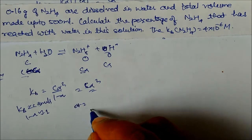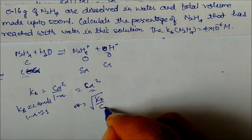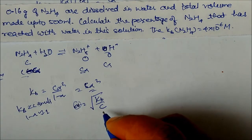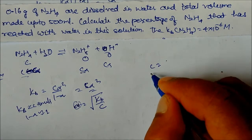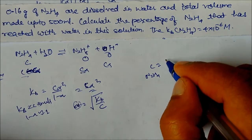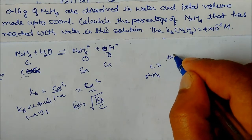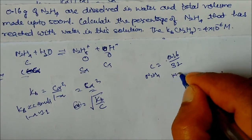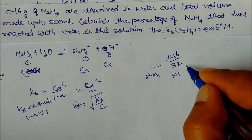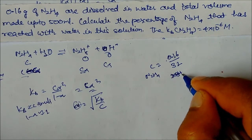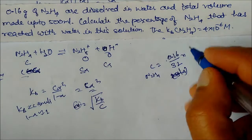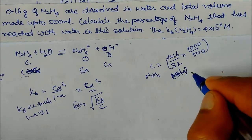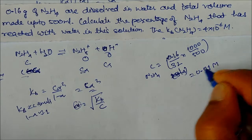We need to find alpha, where α² = Kb/C, so α = √(Kb/C). First, finding concentration C of hydrazine: weight is 1.6 g, molar mass of N₂H₄ = 2(14) + 4 = 32 g/mol, volume = 500 mL. So C = (1.6/32)/(500/1000) = 0.05/0.5 = 0.01 molar. So Kb = 4×10⁻⁶, C = 0.01 molarity.